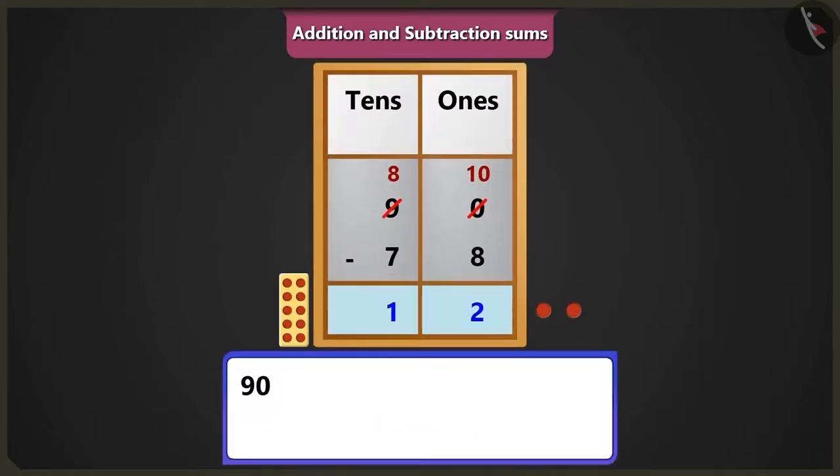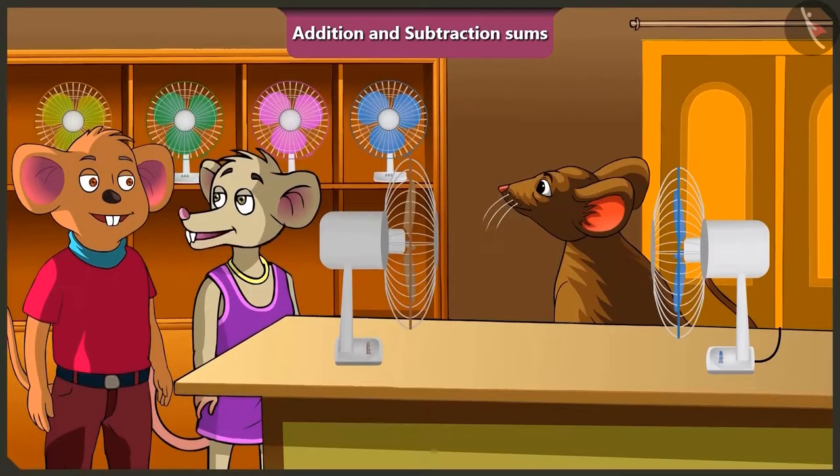So in this way, if we will subtract 78 from 90, then 1 ten and 2 ones means 12 rupees would be the balance amount. Oh wow, Choo Choo. Now you would buy a new fan and also save 12 rupees.